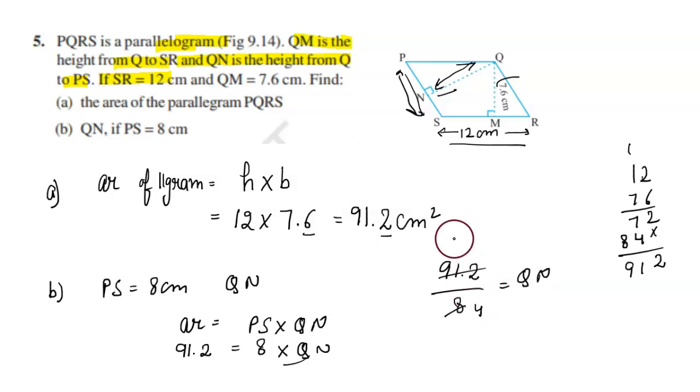So here comes the value of QN. Dividing: 4s are 8, 4s are 8, 5s are 10, 6s are 12, 1s are 4, 1s are 4, 4s are 16. So QN is 11.4 cm.